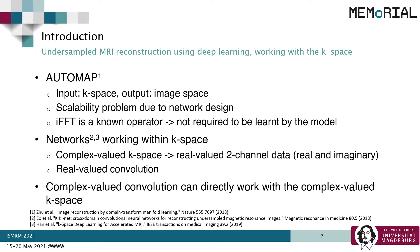AUTOMAP is one such method which works directly in the k-space. Here, the input to the network is the undersampled k-space and the network provides directly the reconstructed image as output. However, this network is not very scalable when it comes to higher matrix sizes due to its design, and also the inverse Fourier transform is a known operator which is not required to be learned by the network.